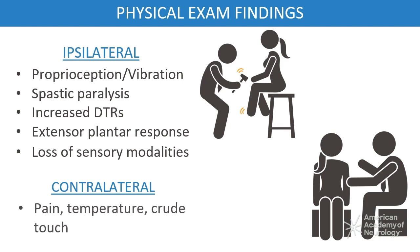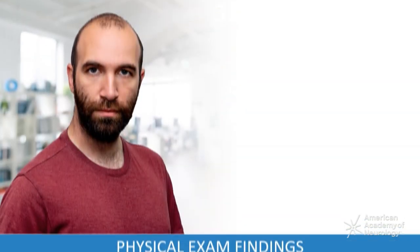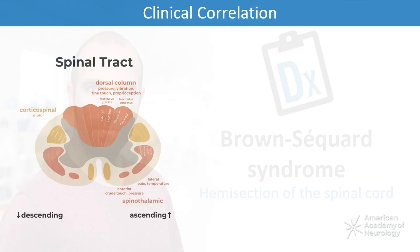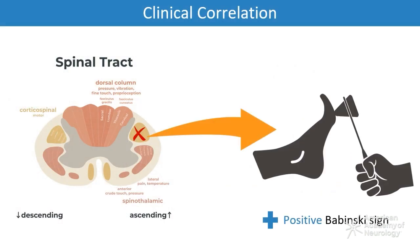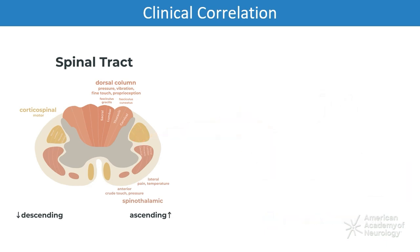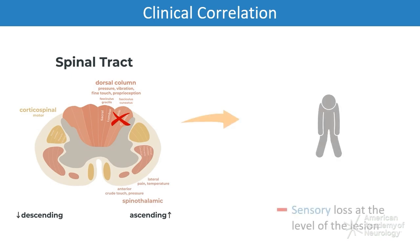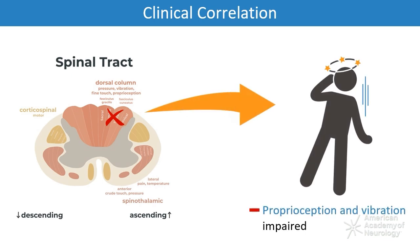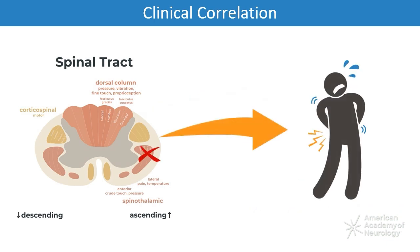Contralateral findings include loss of pain, temperature, and non-discriminative touch sensation one or two levels below the lesion. This patient presented with Brown-Séquard syndrome, or hemisection of the spinal cord. In this case, the ipsilateral weakness and up-going toe were from injury to the corticospinal tracts. The dorsal horns were also affected, resulting in loss of sensory input at the level of the lesion. Proprioception and vibration sense were impaired ipsilaterally due to injury of the dorsal columns. Conversely, the patient experienced contralateral loss of pain and temperature sensation below the level of the lesion, due to damage of the spinothalamic tract fibers that had crossed caudal to the level of the spinal cord injury.